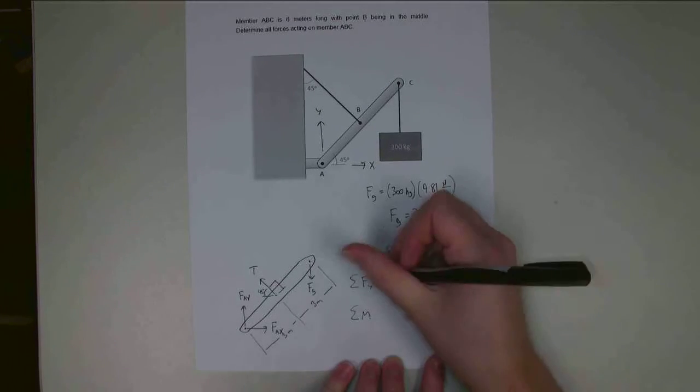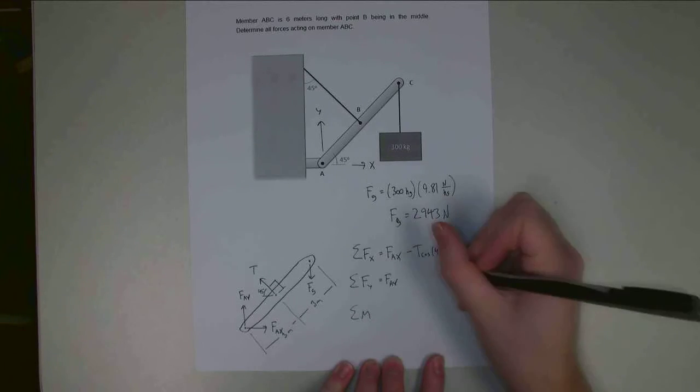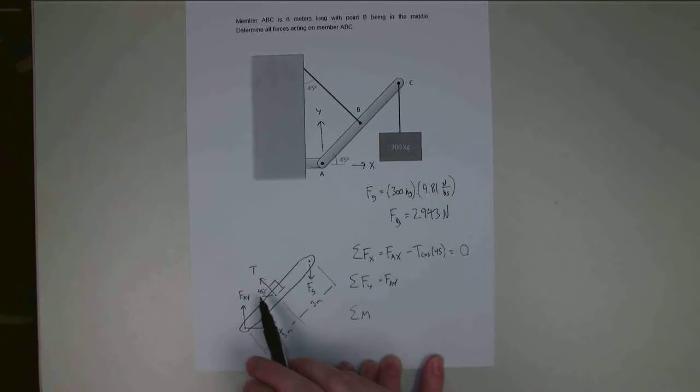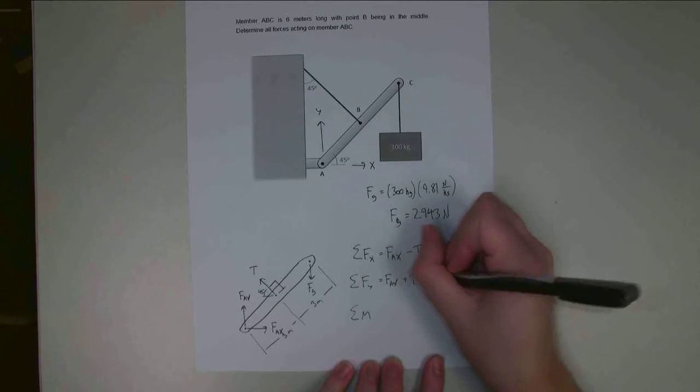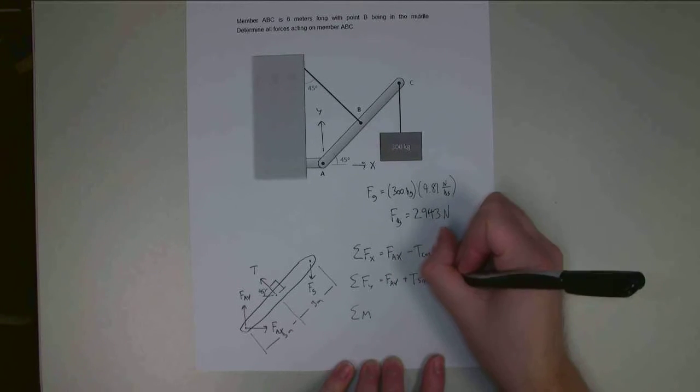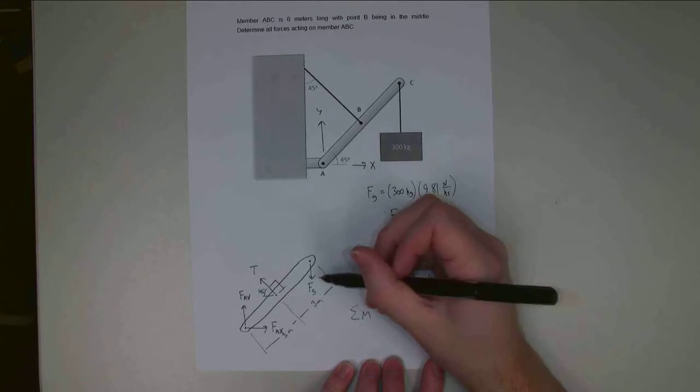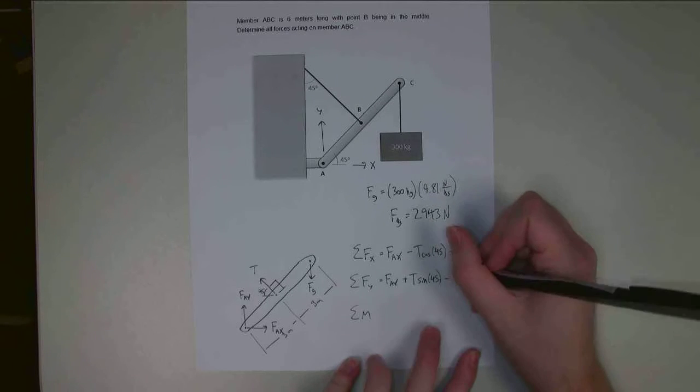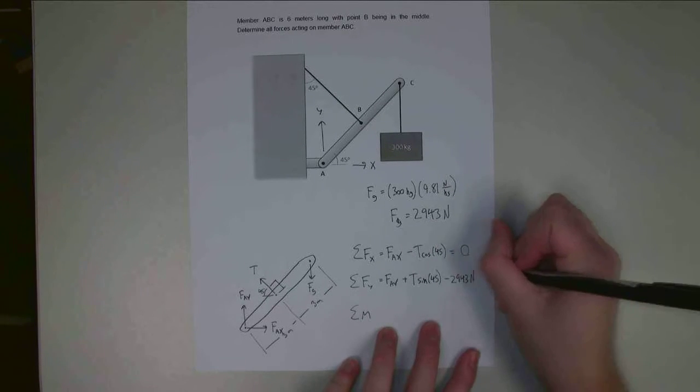In the Y direction, I have FAY, and I'm going to have the vertical component of this tension. So it's plus T sine of 45. And then I take off the gravity force. This one I know is 2,943 Newtons. That's equal to zero.